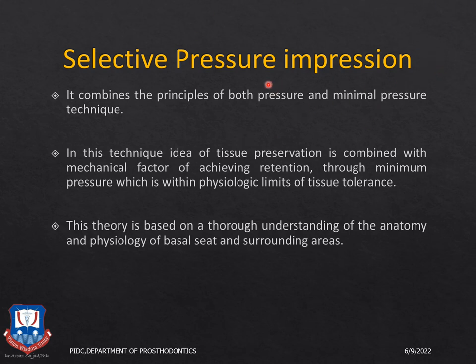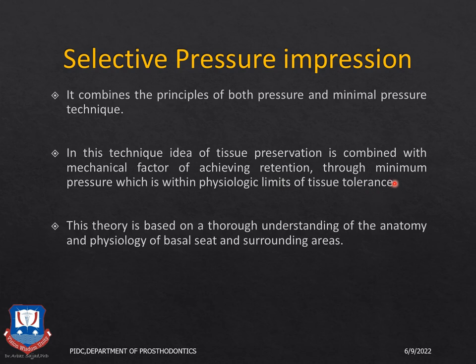The last and most widely used technique — given by Boucher — is the selective pressure impression theory. This combines the principles of both mucocompressive and mucostatic techniques. The idea is tissue preservation combined with achieving retention through minimum pressure applied within the physiological limit of tissue tolerance, on the parts of the residual ridge where pressure can be applied. A thorough understanding of the anatomy of the basal seat tissues and surrounding musculature is required.